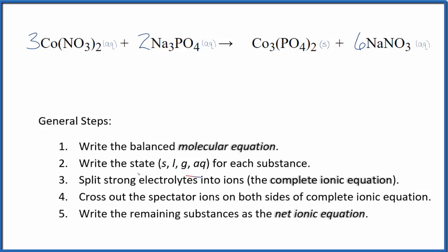Now we can split the strong electrolytes into their ions for the complete ionic equation. Nitrate, the whole nitrate ion here is 1 minus, and we have two of them. So the cobalt, that's going to be 2 plus. So we'll have three Co2+ ions, I'll write the states later, plus we'll have two of these nitrate ions.